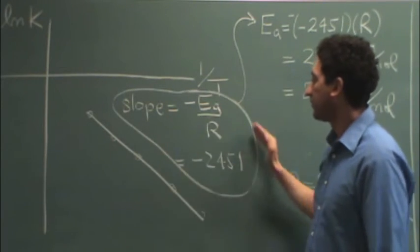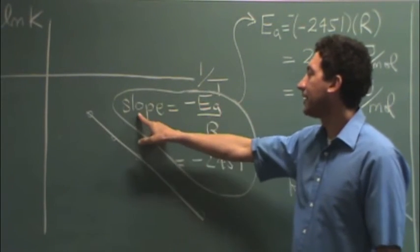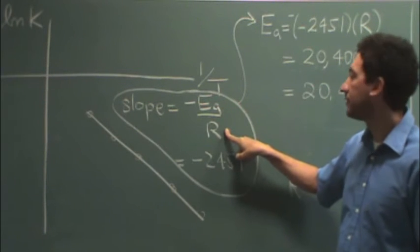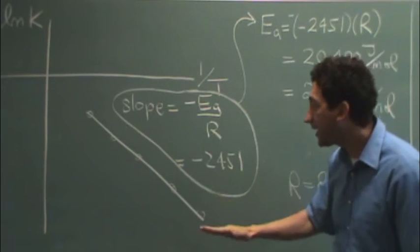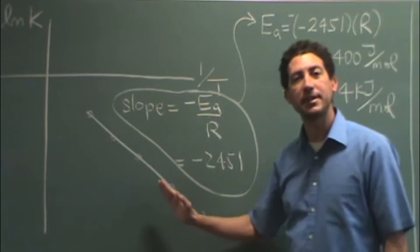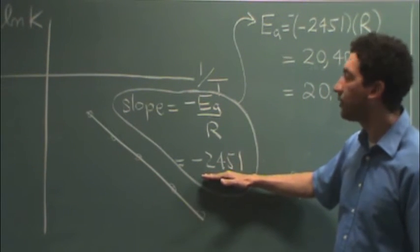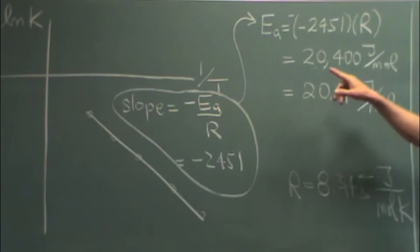And then here in this kind of circle, a long circle here, as I said, the slope is Ea over R. Okay, so that's what we know. I find the slope. So you want to do this, say, in a spreadsheet somehow. And I got negative 2451.